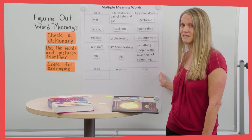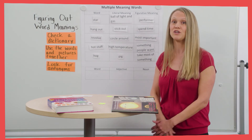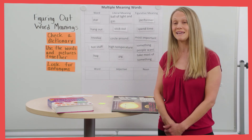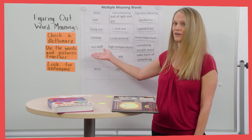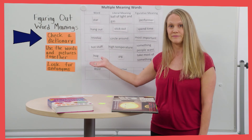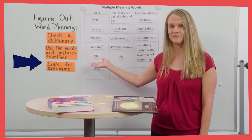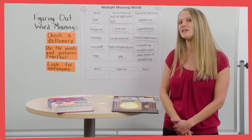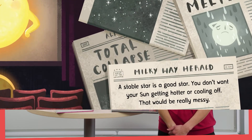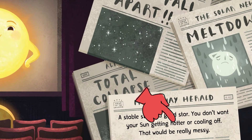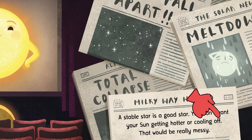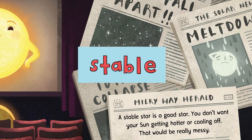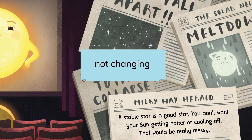So, word detectives, which strategy should we try to figure out stable's meaning in this book? Let's see if we can use antonyms. It tells us stable is good because we don't want it getting hotter or cooler — so that means we don't want it to change much. From that, we can figure out that stable means not changing.